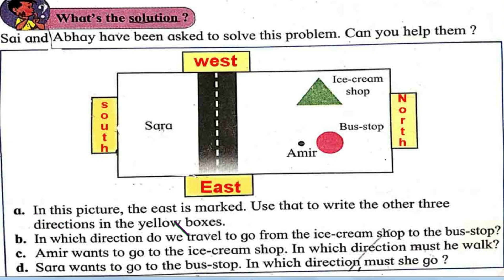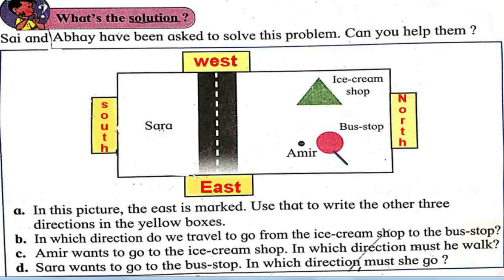Now Sara, see in this picture — East is marked. Use that to write the other three directions in the yellow boxes. We have already written South, West, and North. In which direction do we travel to go from the ice cream shop to the bus stop? We travel from the ice cream shop to the bus stop, so we go towards the East direction. The answer to question B is East.